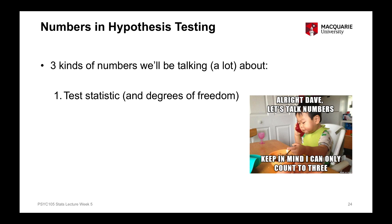Test statistics have what's called degrees of freedom that go along with them. I'm going to be explaining more about degrees of freedom next week when we actually start talking about t-tests. Degrees of freedom are certain values that reflect the sample size that we've obtained the data from, and they also reflect how many parameters or values are free to vary in the specific statistical tests that we're undertaking.